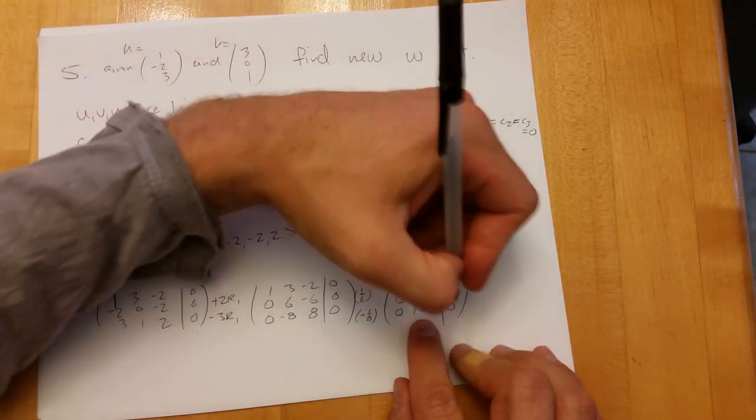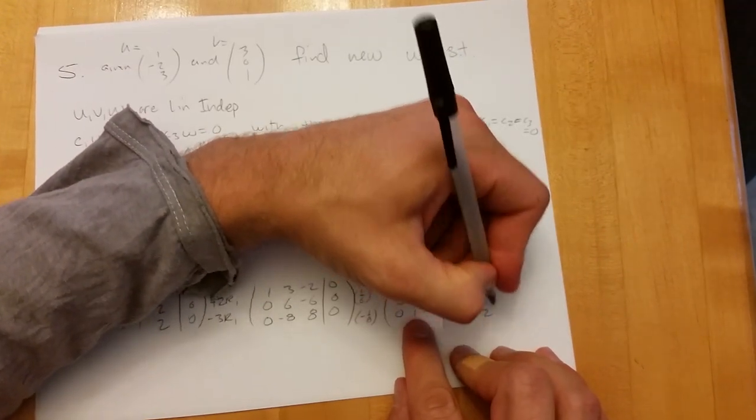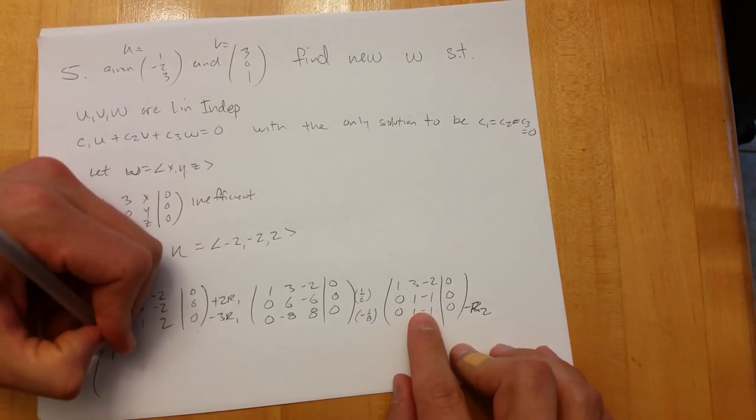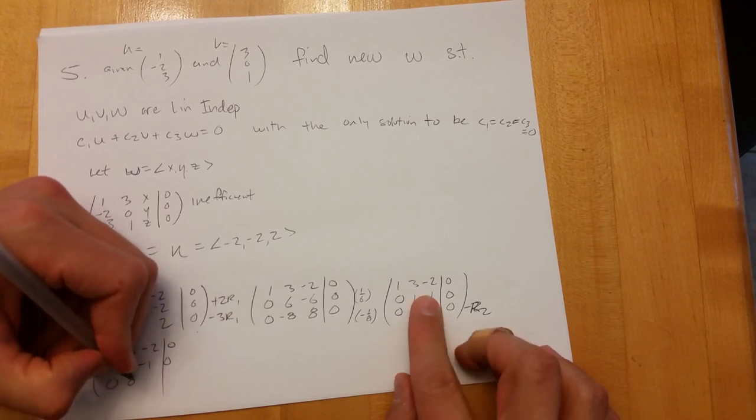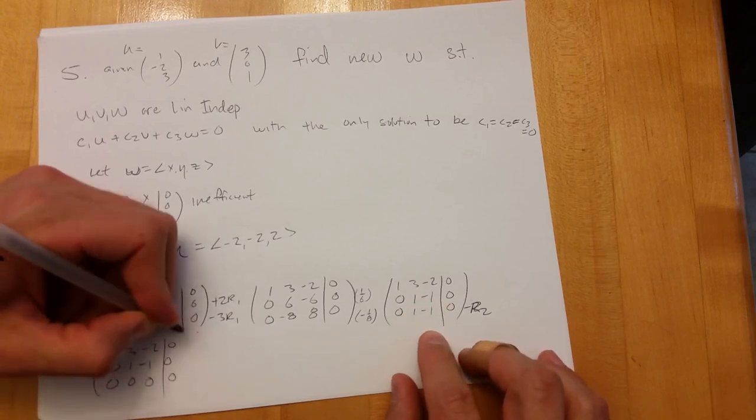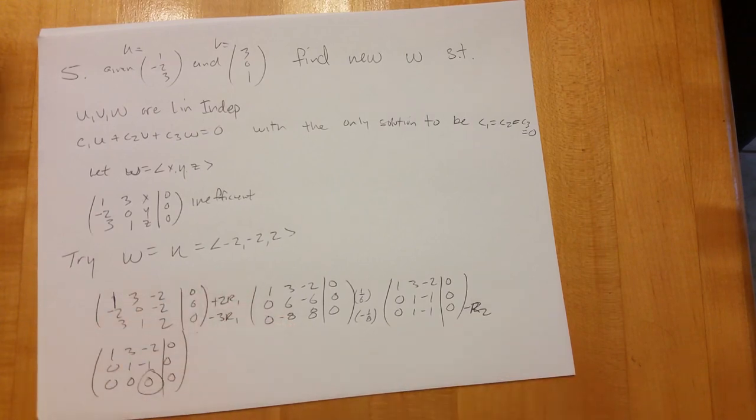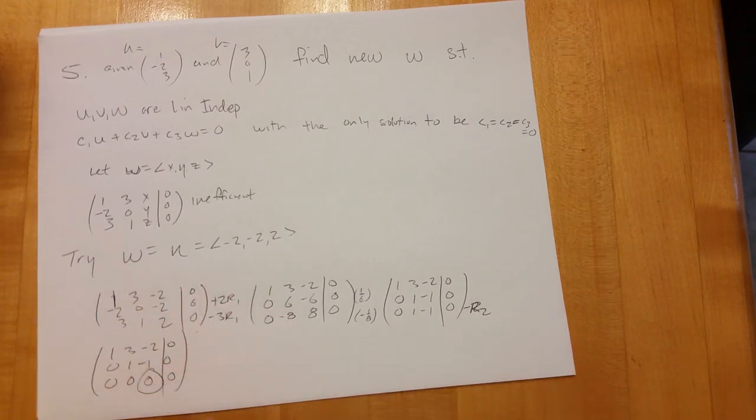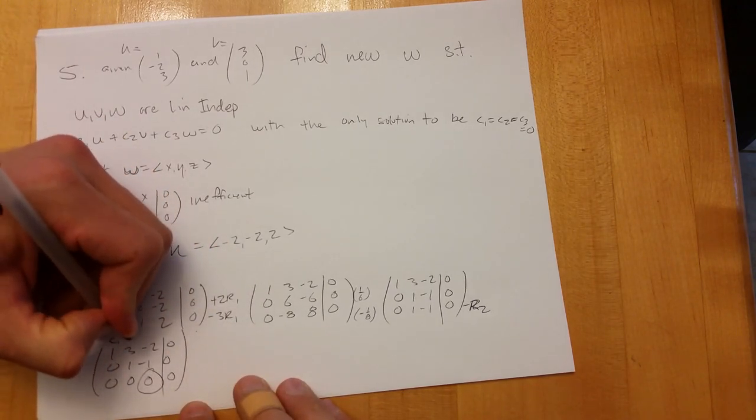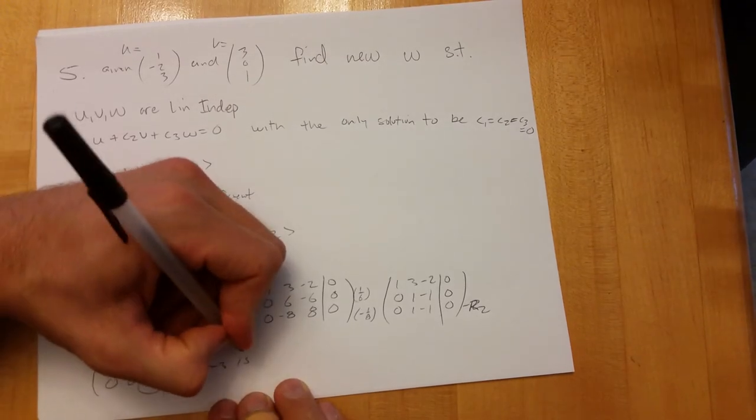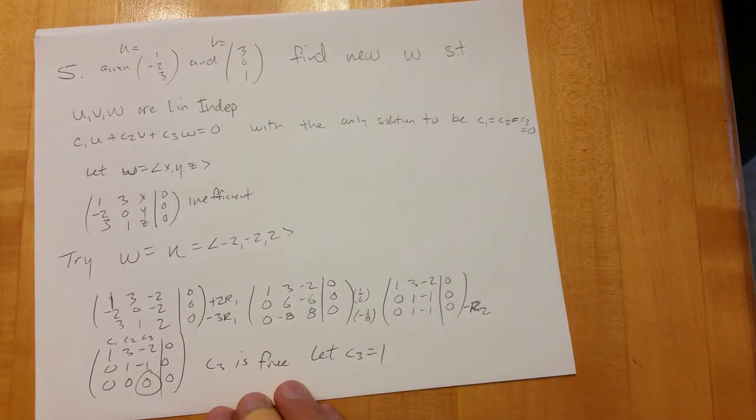This shows me what I don't want to do on the test. So minus - do this on purpose - minus row two. One, three, negative two, zero; zero, one, negative one, zero; zero, zero, zero, zero. So we got a free one, which means we have a non-trivial solution. c3 is free.